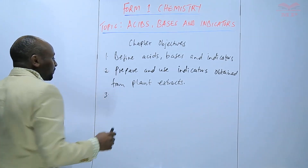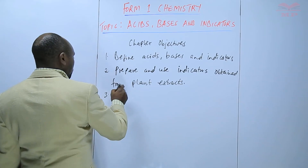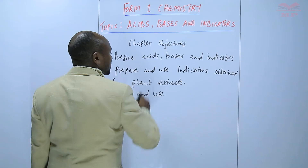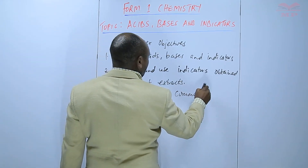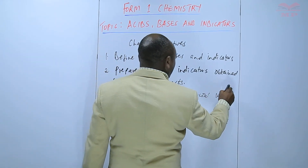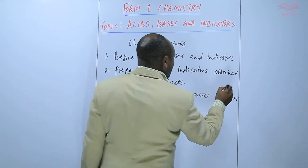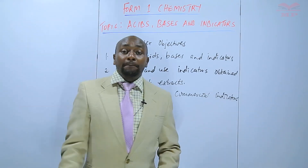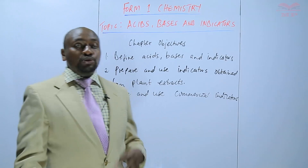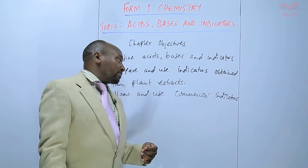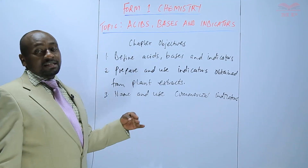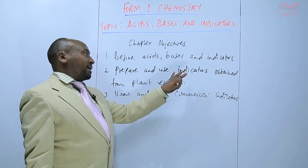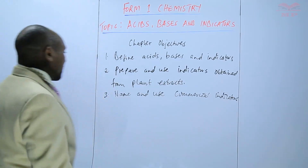Number three, we should be able to name and use commercial indicators — commercially available indicators. These are indicators that we don't prepare ourselves, but they are available commercially, meaning we buy them and then use them. You'll be able to know which are some of these indicators and how they compare with those extracted from plants.